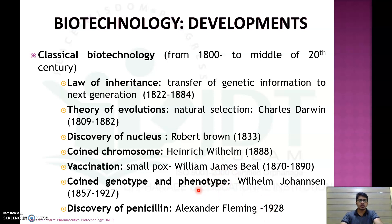In 1928, Alexander Fleming discovered penicillin serendipitously while doing a fermentation experiment. He discovered that a product obtained during the fermentation process was inhibiting the growth of microorganisms, which led to the discovery of antibiotics. These are some of the important developments during the classical biotechnological era.